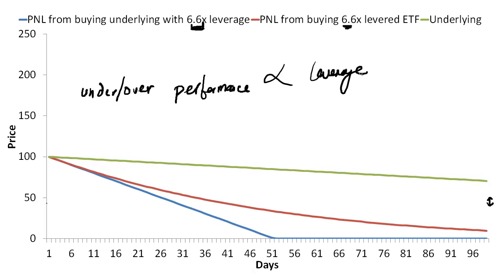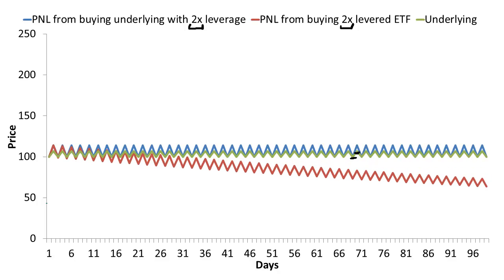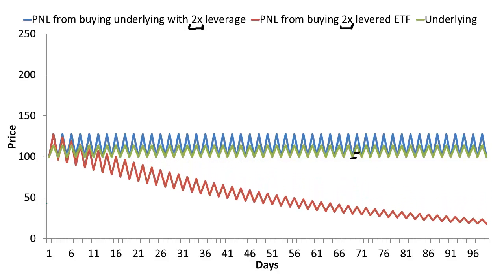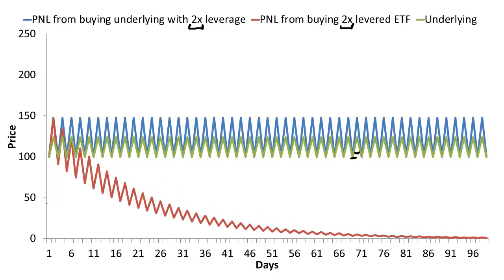Another factor that influences the over or under performance of the levered ETF is the amount of volatility in the underlying. We're going to go back to our original path where we assume the underlying very consistently mean reverts — goes up and then goes down and so on — assuming only a 2x levered ETF. This time we're going to change the amount that the underlying goes up and down every day. As I increase that range such that the volatility of the underlying is going up, you can see the levered ETF underperform levering up the underlying on your own.